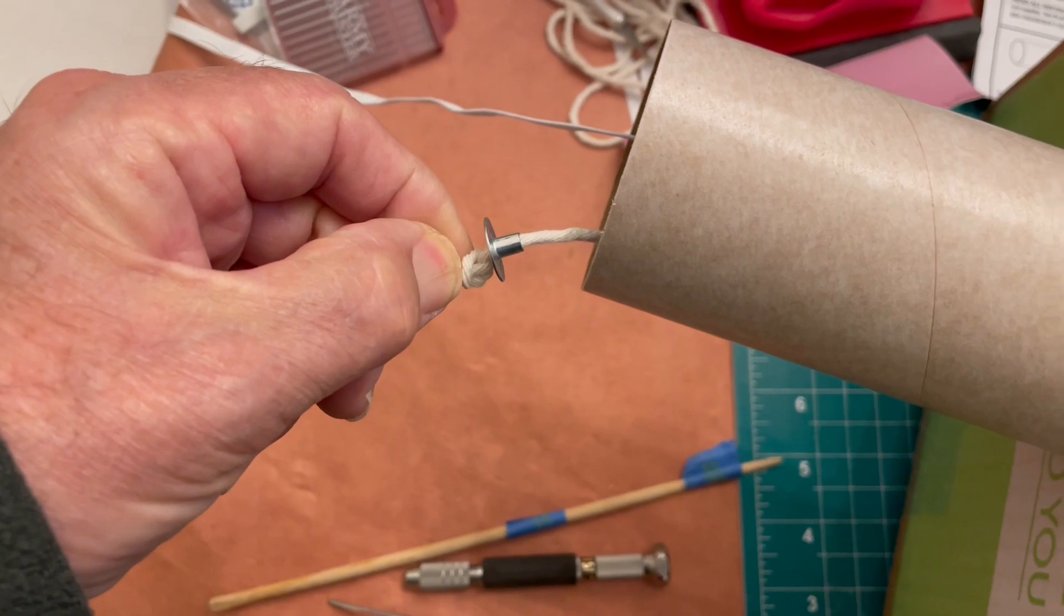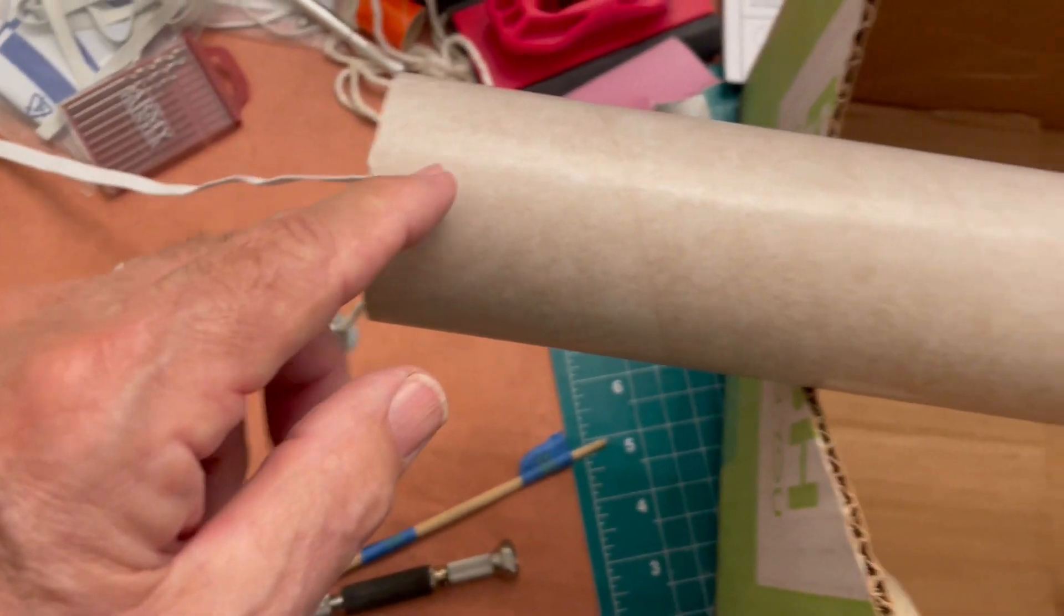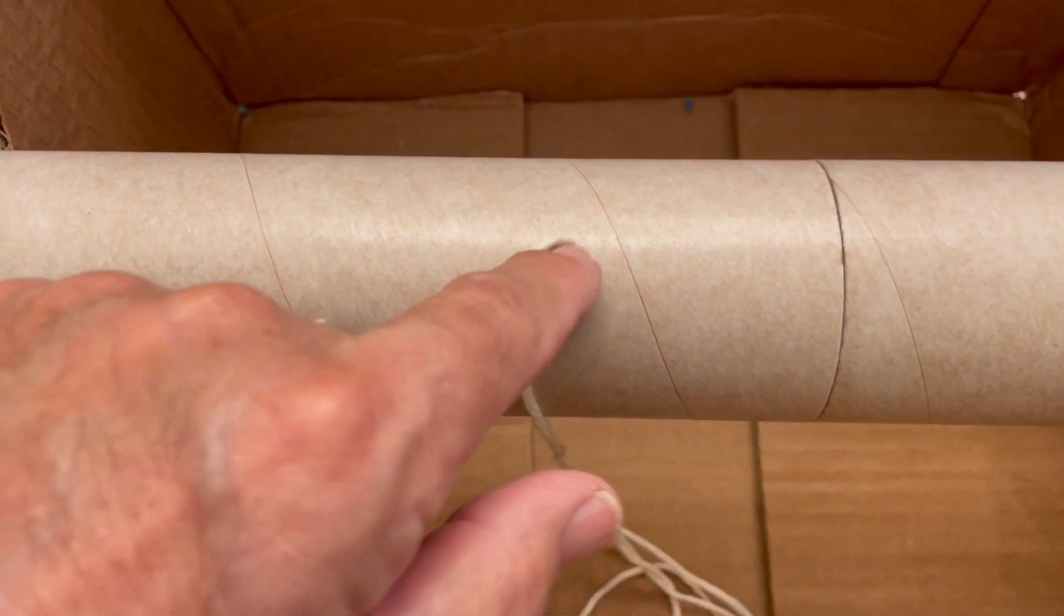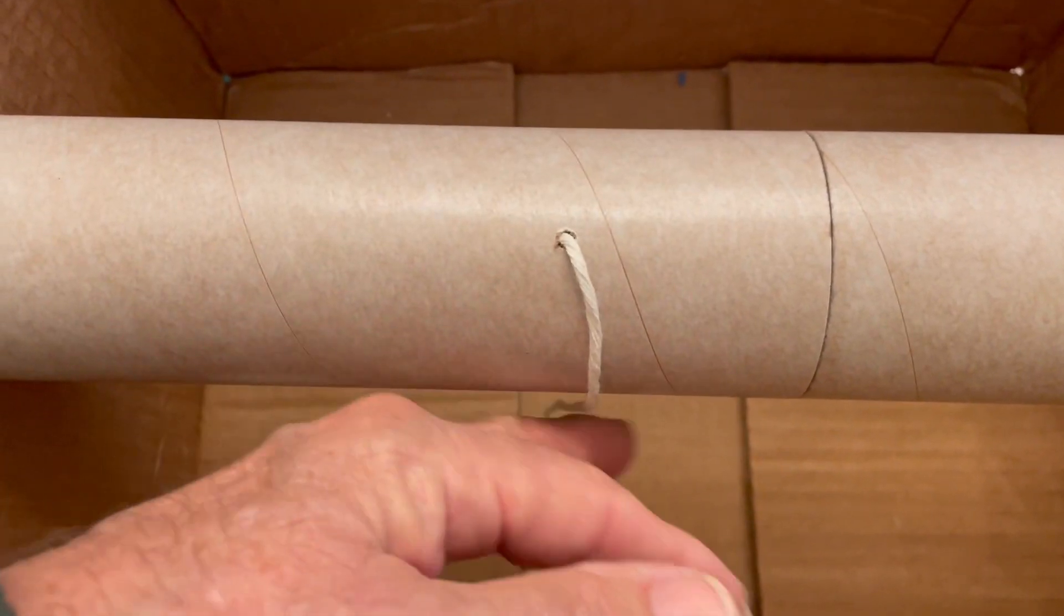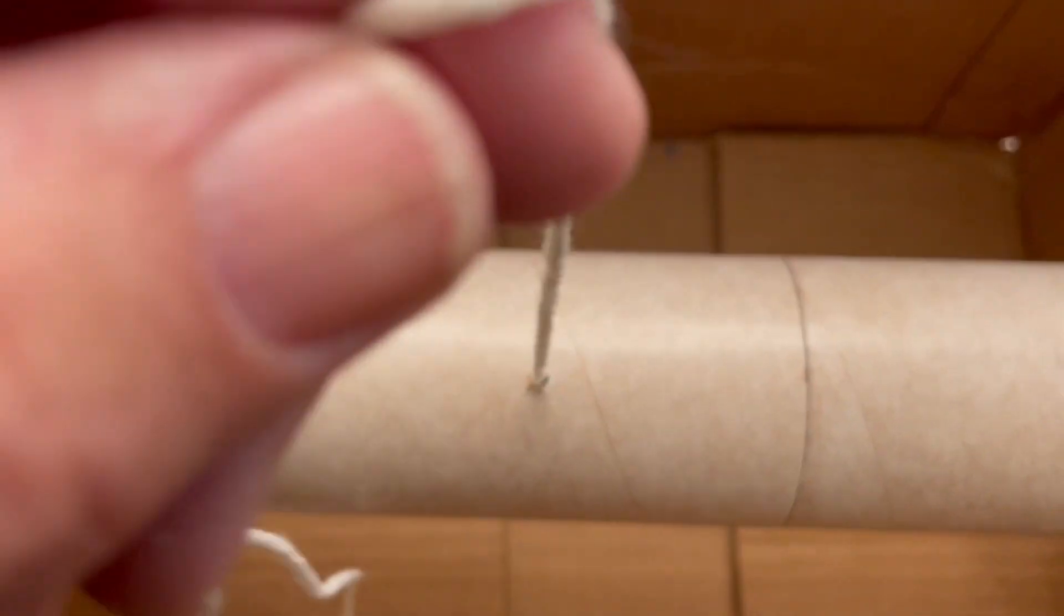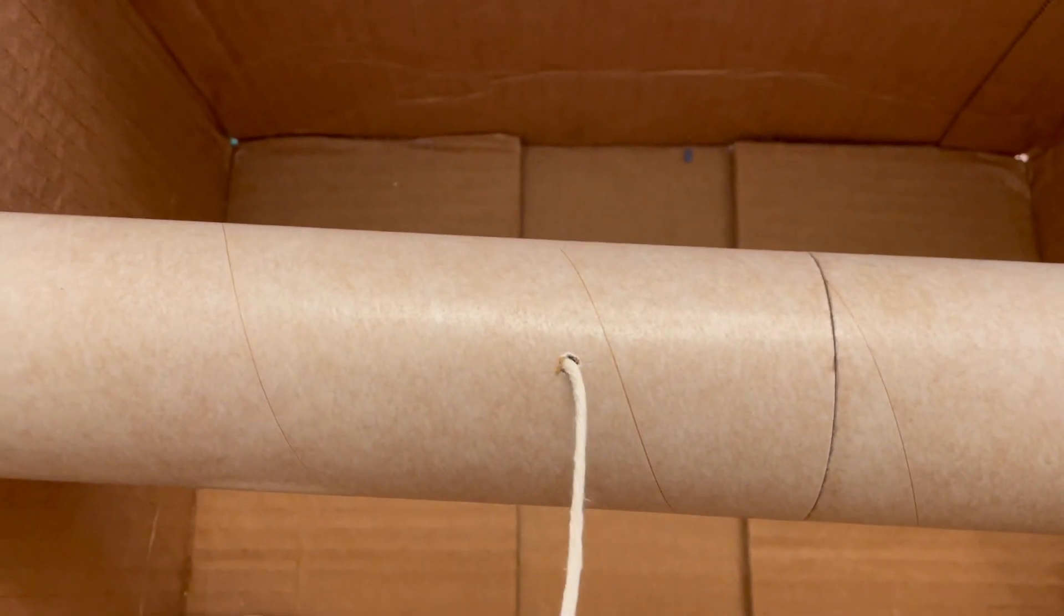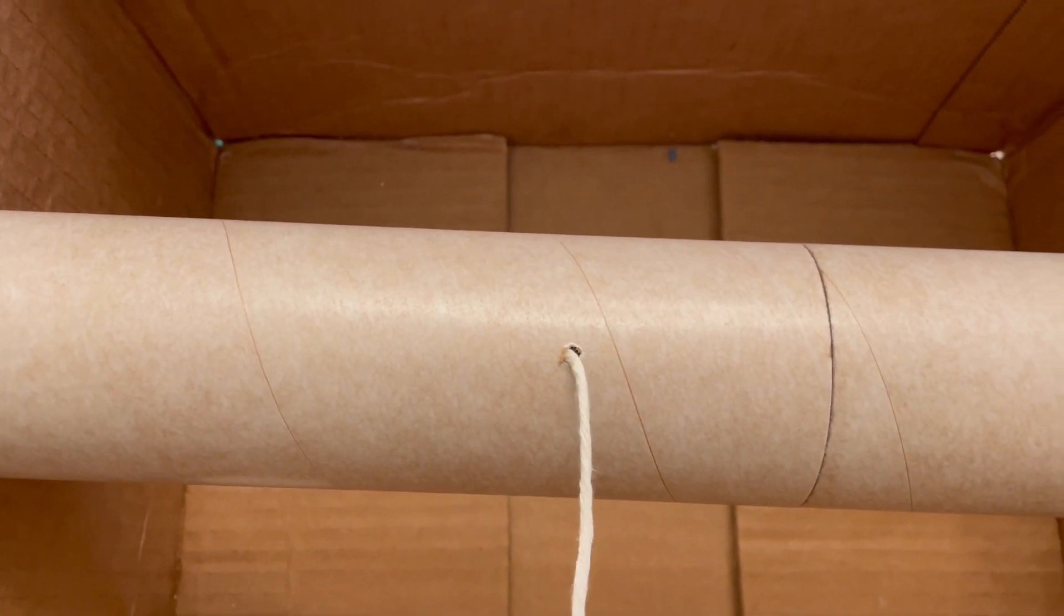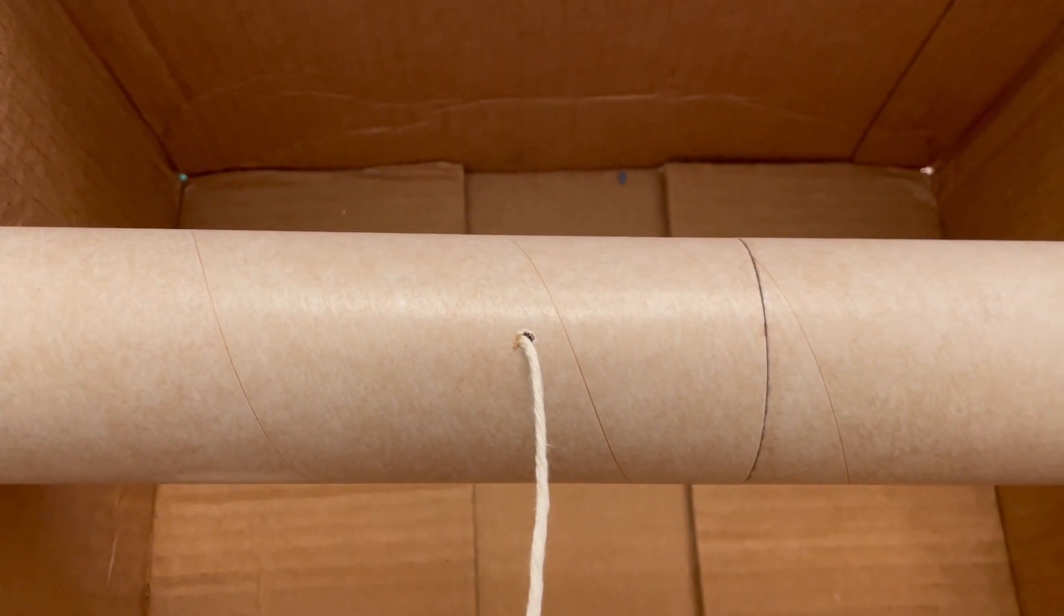So now I can reach up in there with a dowel and glob glue in there and then pull my string until the rail button pops out through there. Let me show you that.